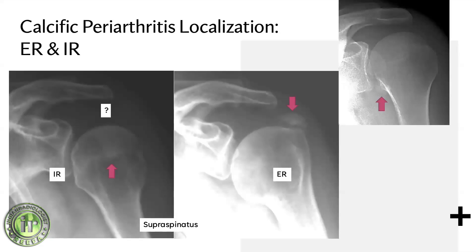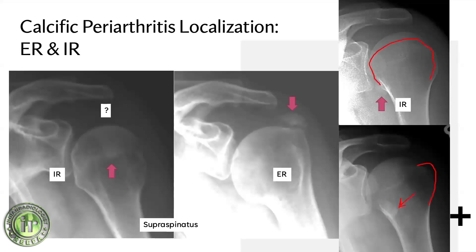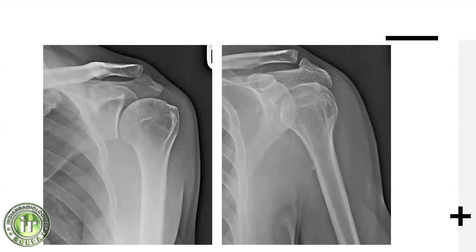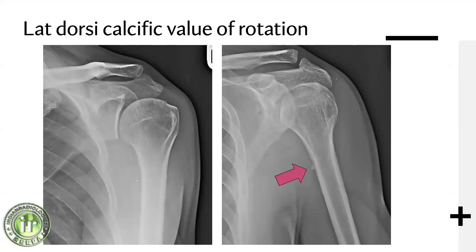Contrast that with a case showing a globular calcification near the axillary recess on an internally rotated view. When you do the external rotation view, the calcification moves laterally - this tells you the calcification is sitting in the subscapularis. In another case with excruciating pain and nothing visible on external rotation, the internally rotated view clearly reveals a small calcification that turns out to be at the latissimus dorsi attachment - a latissimus dorsi calcification. This demonstrates the importance of rotation views.